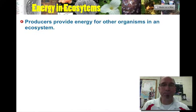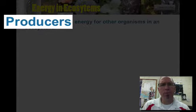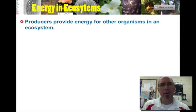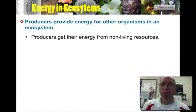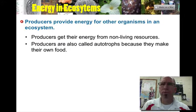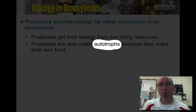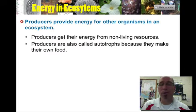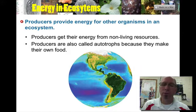Producers — organisms that collect energy and are the source of energy for an ecosystem — are called producers. They get their energy from non-living things. We are consumers, we are not producers. So producers are also called autotrophs. Autotrophs means self-feeder, so they make their own food. Our planet is covered with autotrophs — autotrophs in the ocean, autotrophs on land.